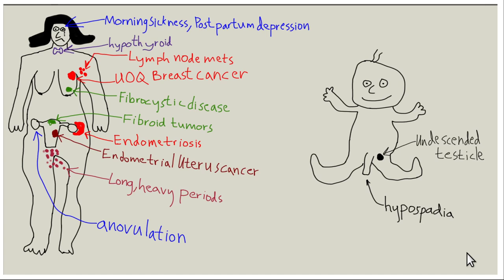This video is about obesity causes, part nine. We're going to be talking about obesogenic chemicals and endocrine disrupting chemicals, which are usually estrogenic chemicals.